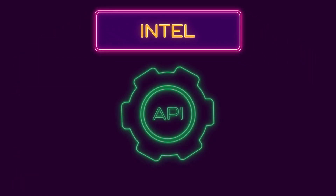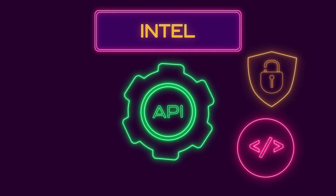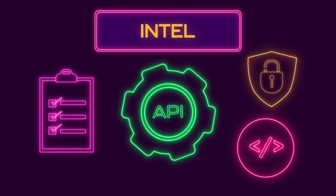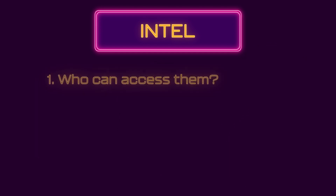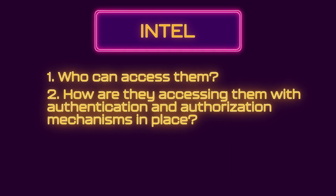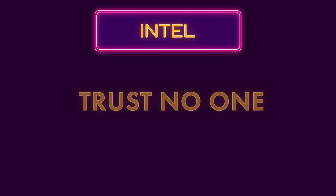Intel: your APIs consist of functions, objects, and properties that require careful consideration. Who can access them? How are they accessing them, with authentication and authorization methods in place? Make sure that your API takes the proper measures to protect them. Trust no one is critical here.